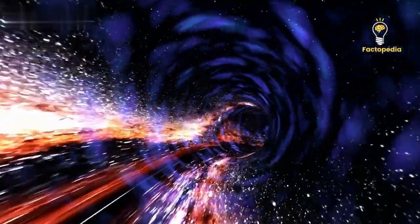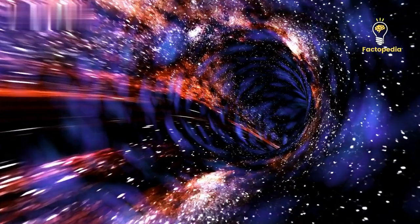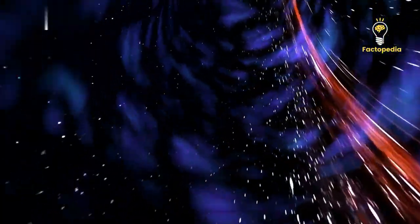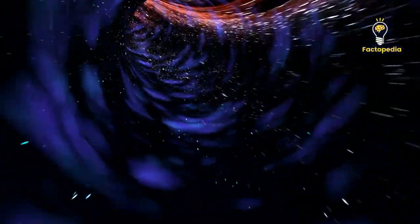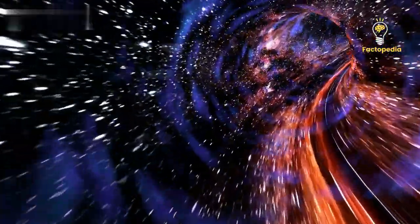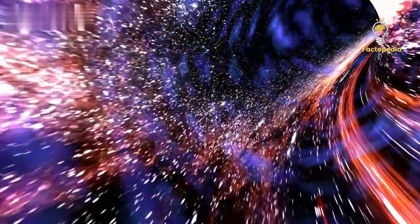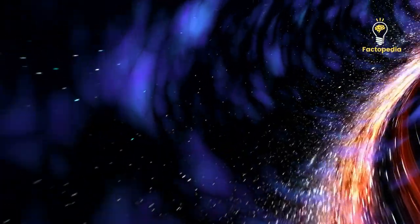Now, you might wonder, why is this such a big deal? Well, brace yourself. Betelgeuse is located a mind-boggling 650 light-years away from us. That means what we see now is actually how the star appeared 650 years ago.